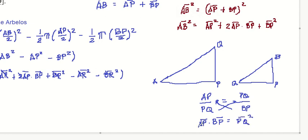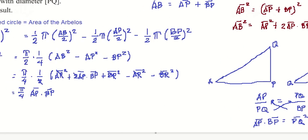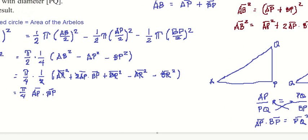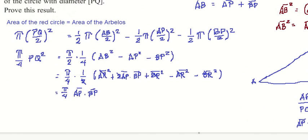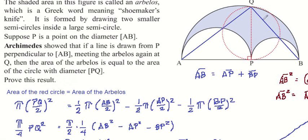Let's apply this. There you go. AP times BP equals PQ². So this is now π/4 times PQ², which is actually the area of the red circle. So that's how we proved that the area of the red circle is equal to the area of the arbelos.